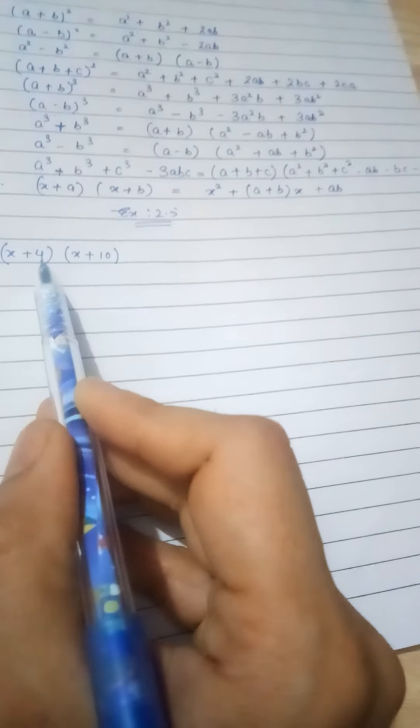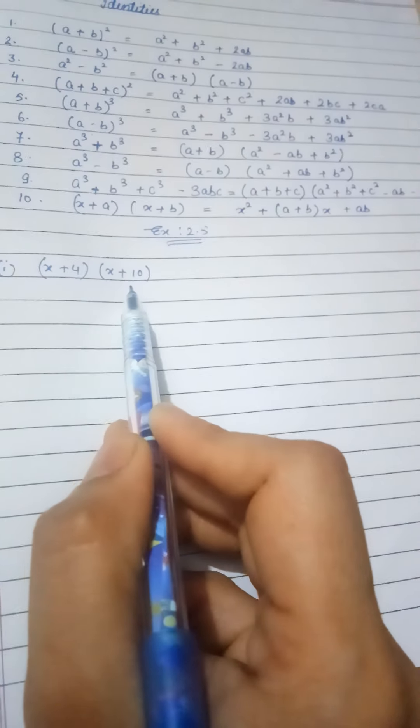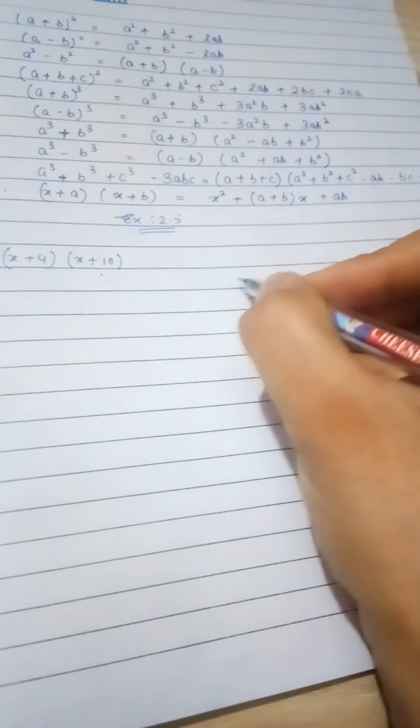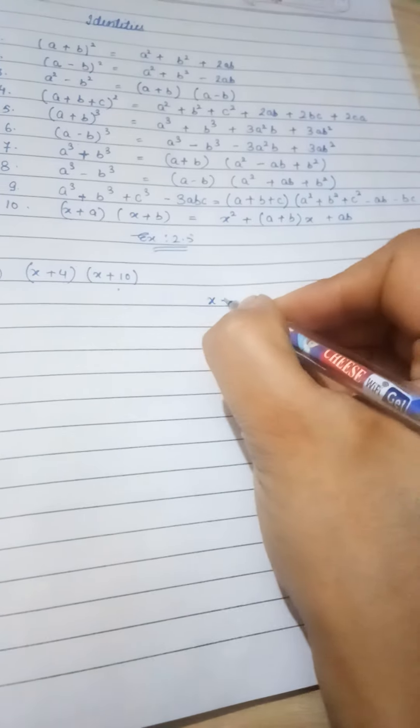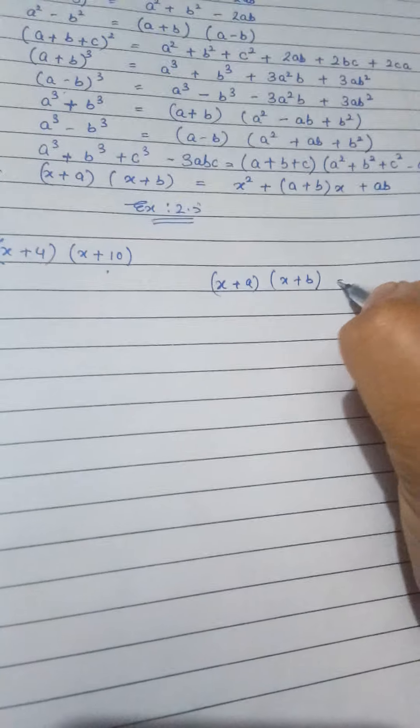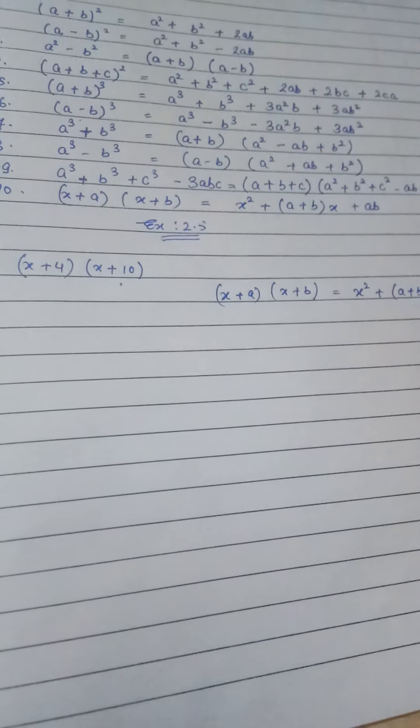In that identity, x is the same and in a place will be 4 and in b will be 10. So we will just mention it here. We know that x plus a and x plus b is equal to x squared plus a plus b times x plus ab.